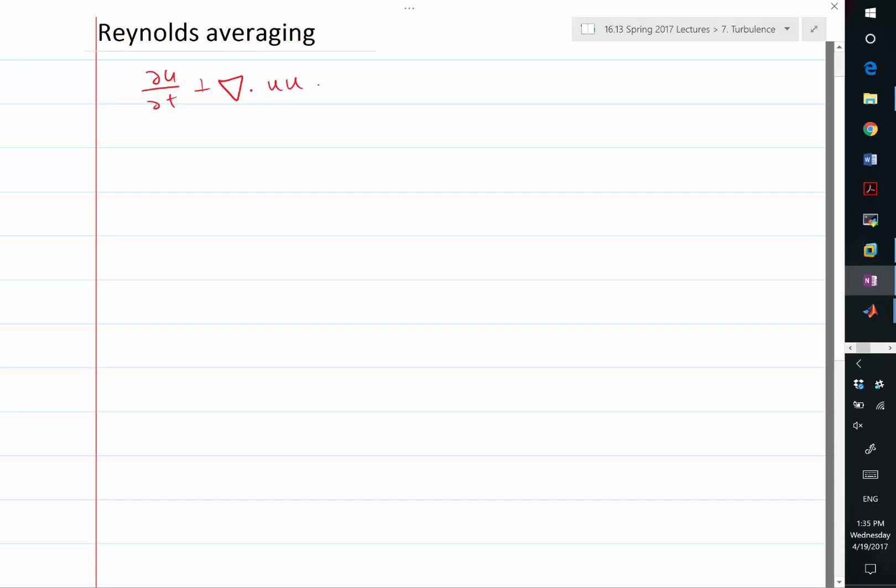That's the advection term. And plus gradient of pressure is equal to, we have the laminar viscosity times Laplacian of U. We also have the divergence of U equal to 0.